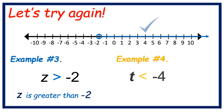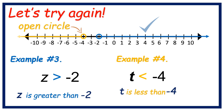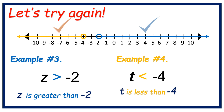Example number 4: T is less than negative 4. Again, we need to look for negative 4. Draw an open circle. Is it left or right? The symbol is pointing to the left, so arrow going left. Just like that, you got it.